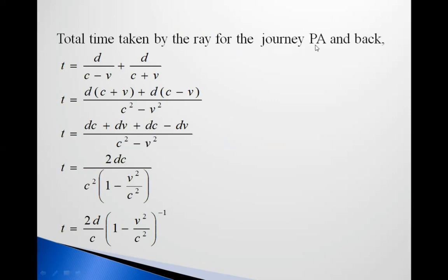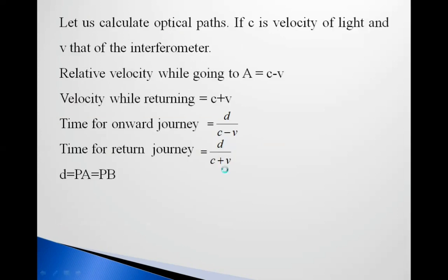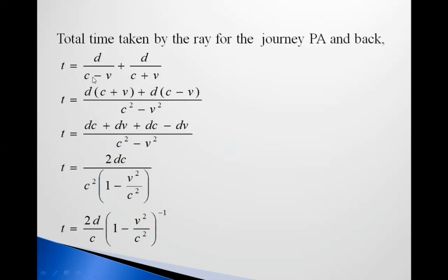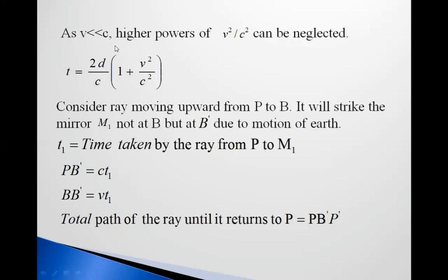Total time taken by the ray for the journey PA and back: T = D/(C−V) + D/(C+V). By cross multiplication, T = [D(C+V) + D(C−V)] / (C²−V²) = 2DC / (C²−V²). Taking C² outside: T = (2D/C) · 1/(1−V²/C²). Since V is very much less than C, using the binomial approximation and neglecting higher powers, T = (2D/C)(1 + V²/C²).